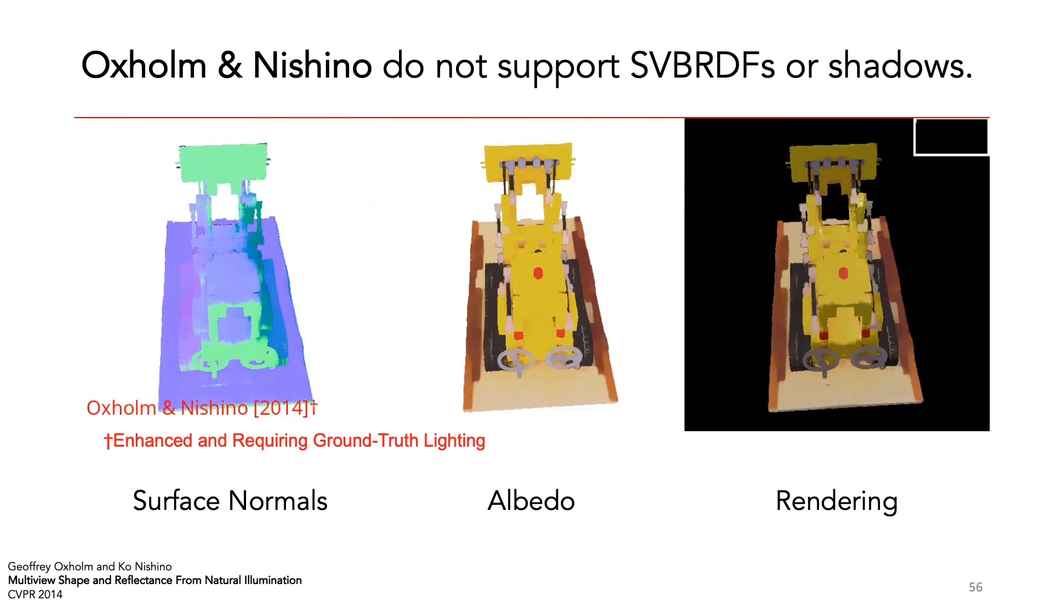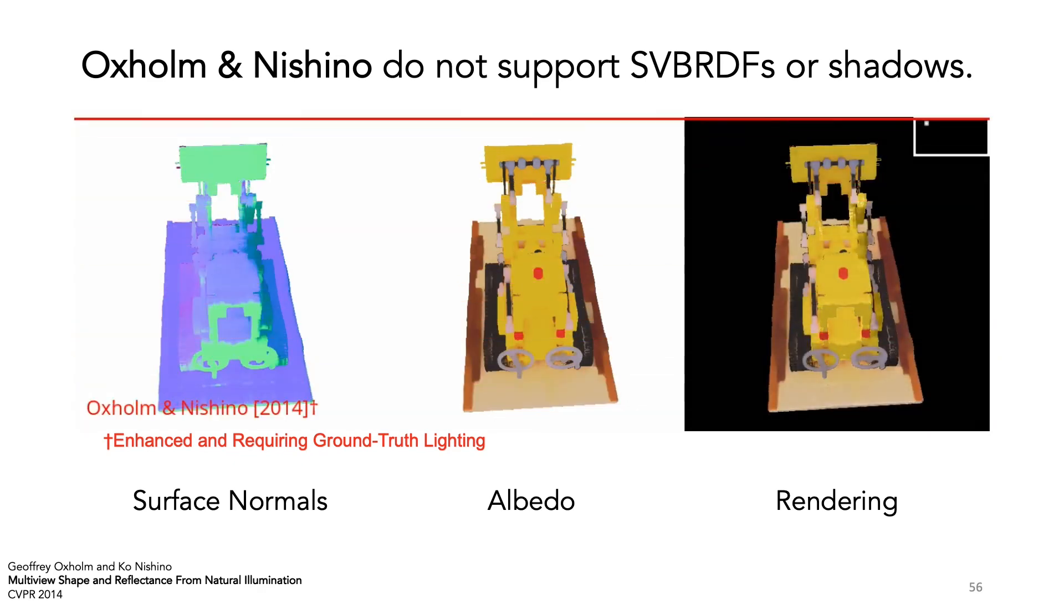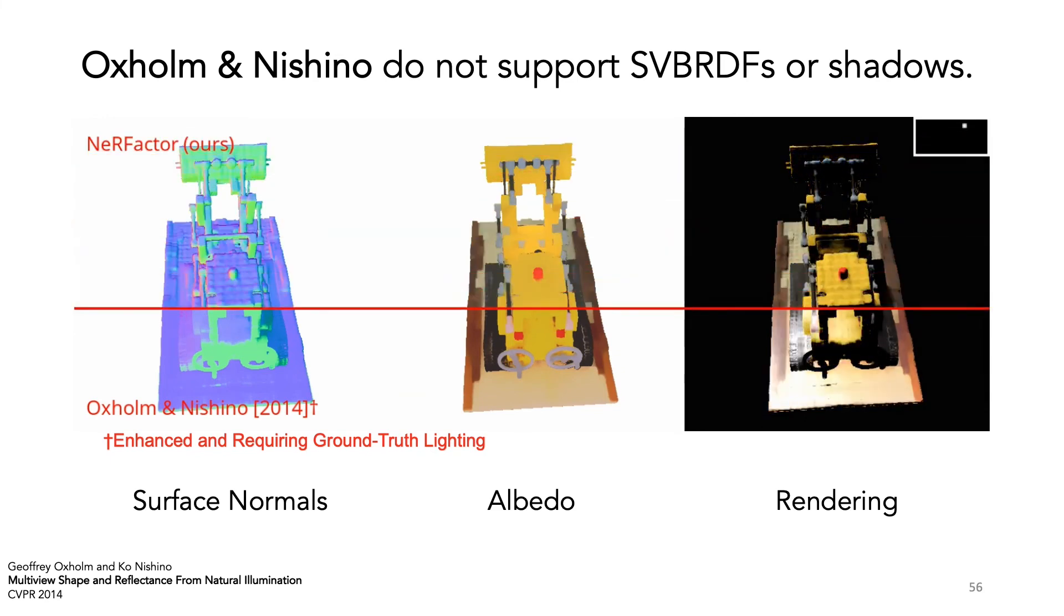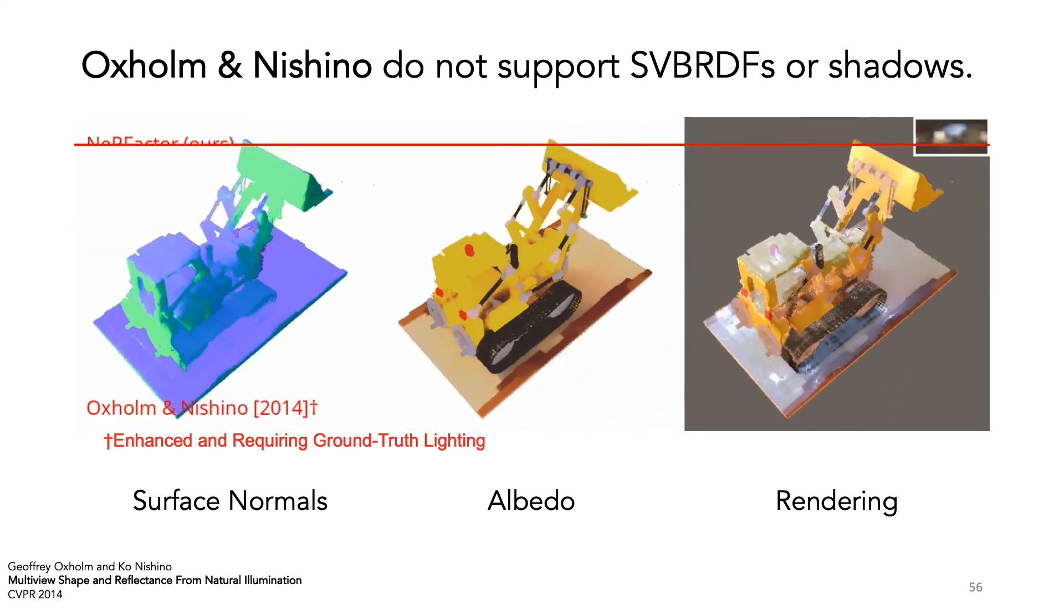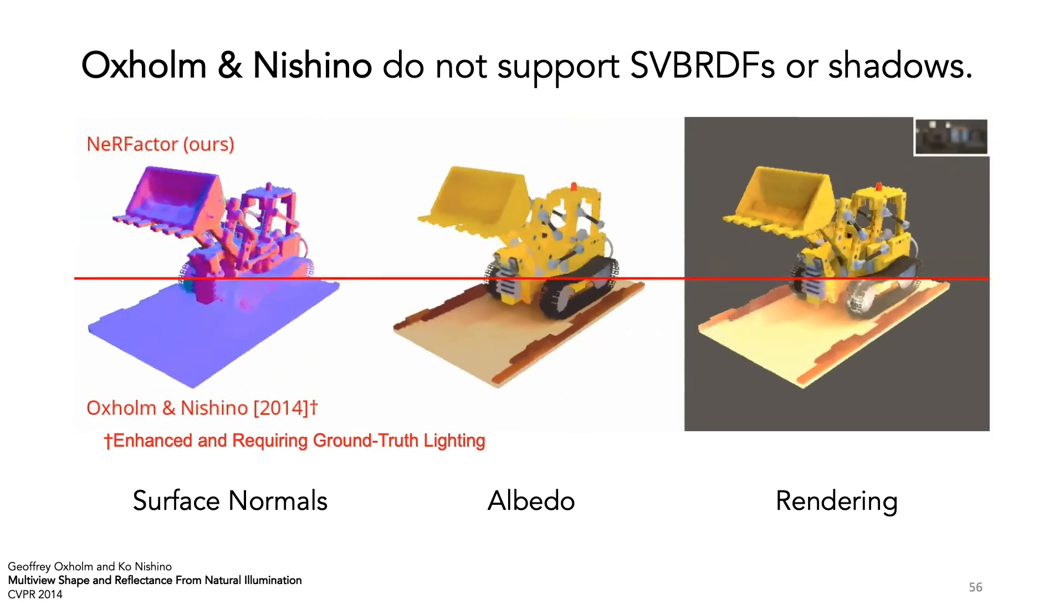Now we compare with an enhanced version of Oxholm and Nishino 2014. Unlike NeRFactor that estimates lighting, this approach requires ground truth lighting. There is no shadow in its results because it doesn't model visibility. As a consequence, there are shadow residuals in its albedo. Moreover, it doesn't support spatially varying BRDFs.